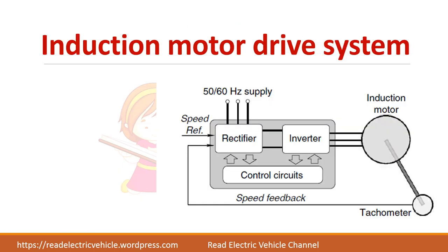This is a simple induction motor drive system. The induction motor needs three-phase input, which can come from a voltage source inverter. The inverter needs DC input that comes from a rectifier — the AC voltage is converted into DC, and DC is again converted into AC. This way you can get both variable voltage as well as variable frequency for the induction motor.